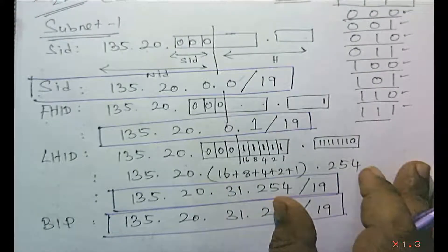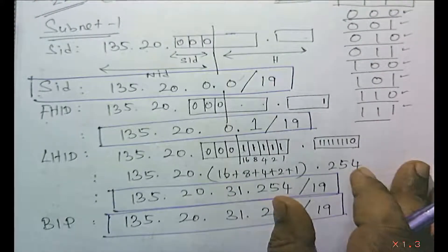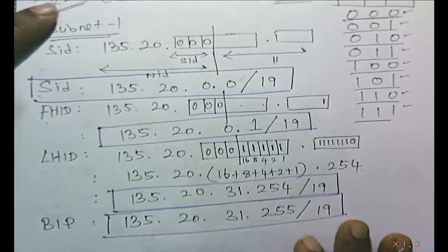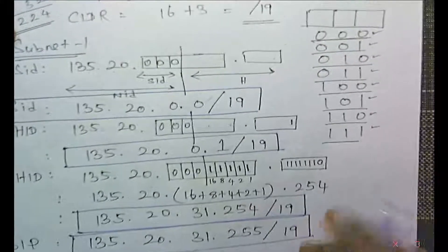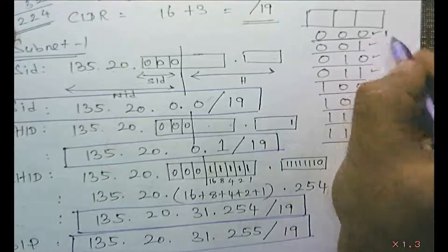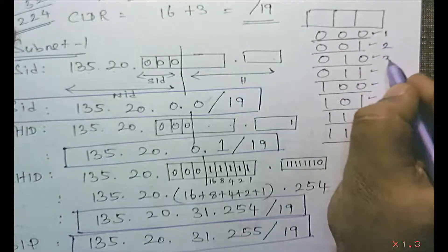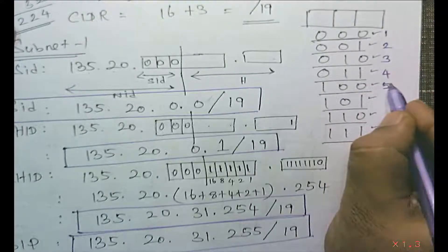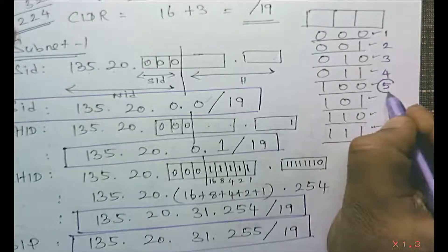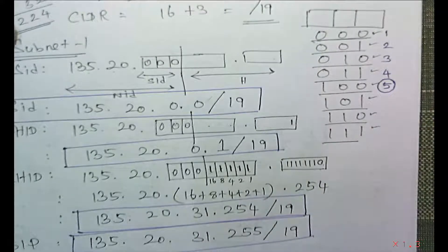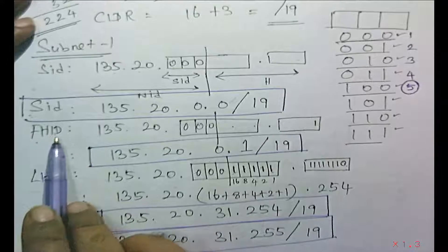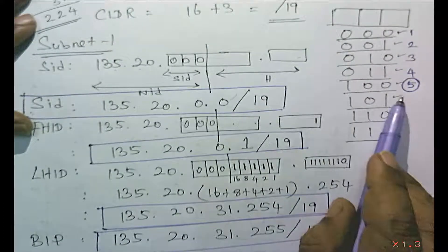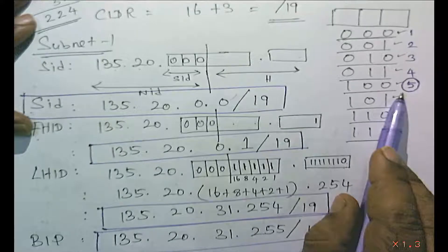Now I am going directly to the fifth subnet, skipping the second, third, and fourth. You can see subnet 1, second subnet, third subnet, fourth subnet, fifth subnet. For the fifth subnet, we need to find the subnet ID, first host ID, last host ID, and broadcast IP address.